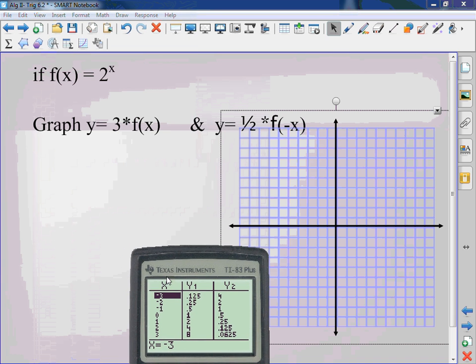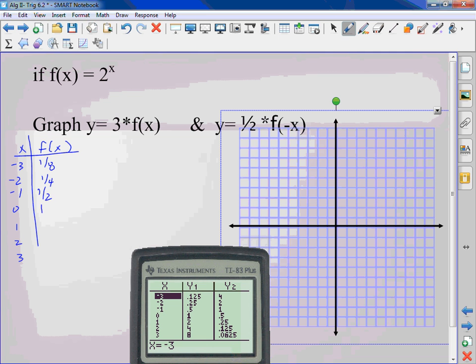Let me do the chart. I'll do it by hand. You had your original one. Negative 3, negative 2, negative 1, 0, 1, 2, 3. This was 1 eighth, 1 fourth, 1 half, 1, 2, 4, 8. That's the original one.